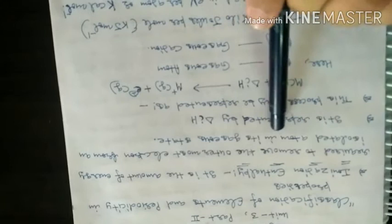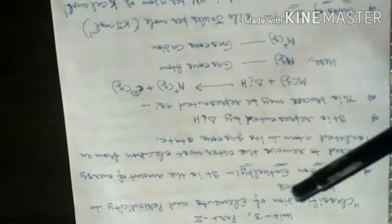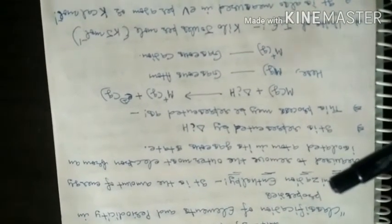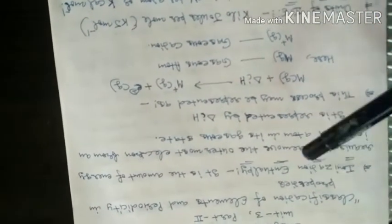The amount of energy required to remove the outermost electron from an isolated atom in its gaseous state. Meaning: a single isolated atom — not bonded — from its outermost shell, we remove the electron. That energy is called ionization enthalpy.